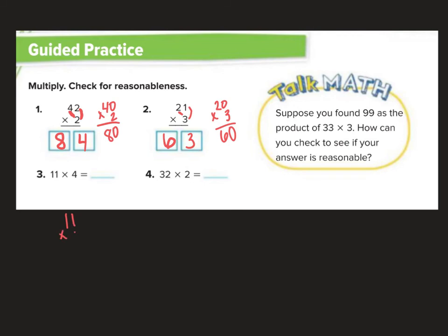11 times 4. 4 times 1 is 4. 4 times 1 is 4. So, our answer is 44. Let's check by saying, what if I did 10 times 4? 10, 20, 30, 40. Are 44 and 40 close together? Yes, they are.